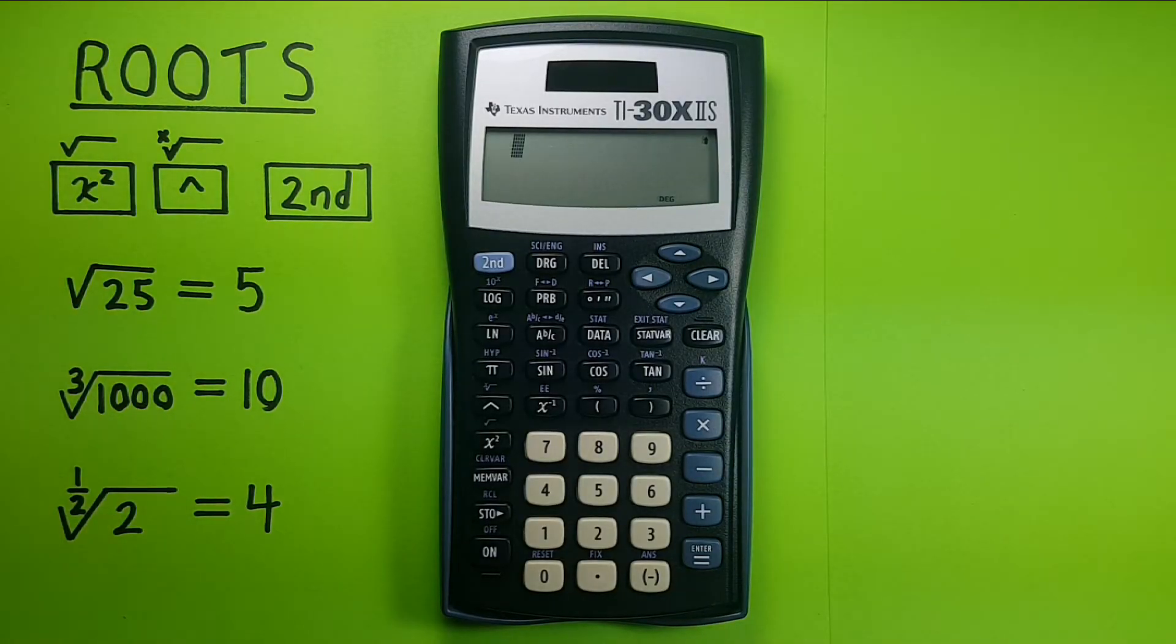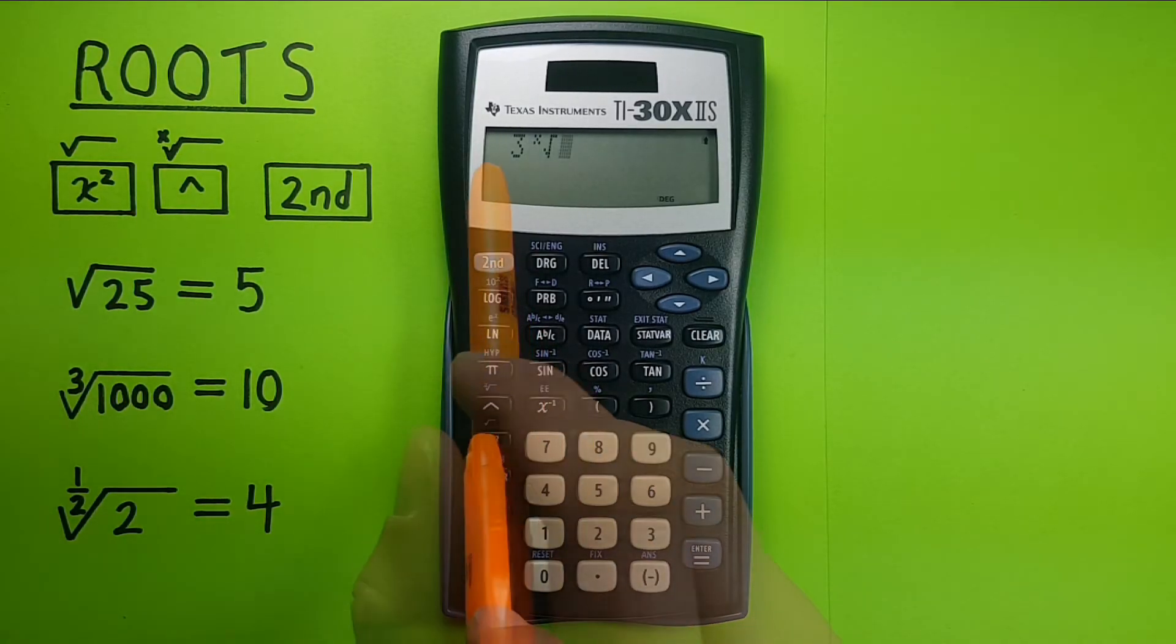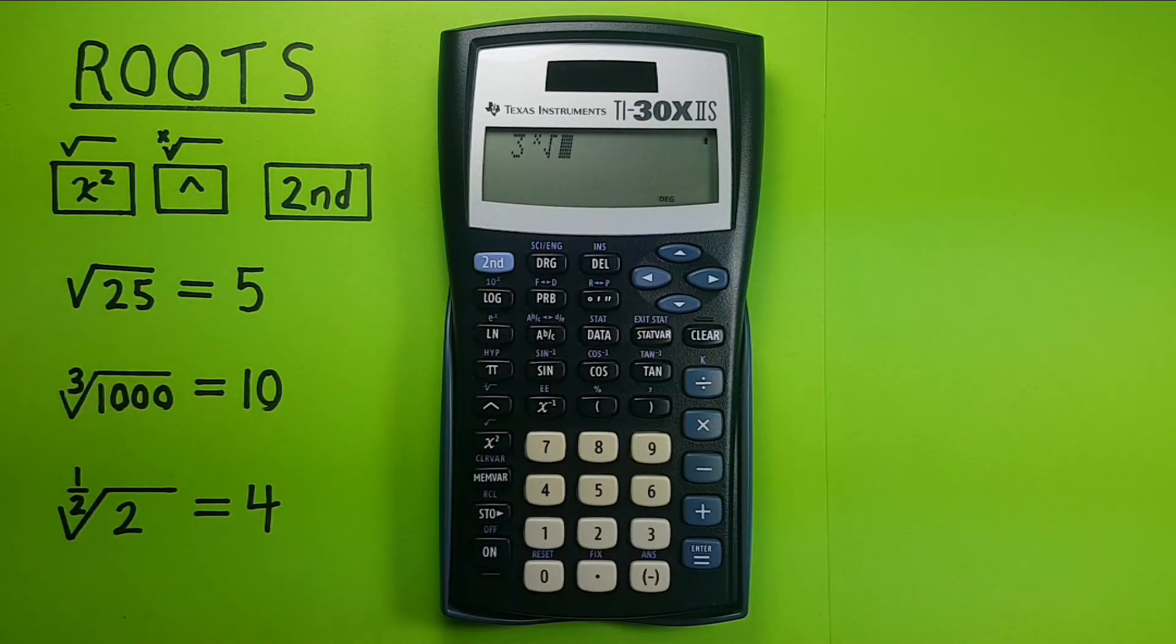Well to do this first we enter the 3 and the second function x root key, here we have the third root, and then enter the 1000 equals, this gives us 10. The cube root of 1000 is 10.